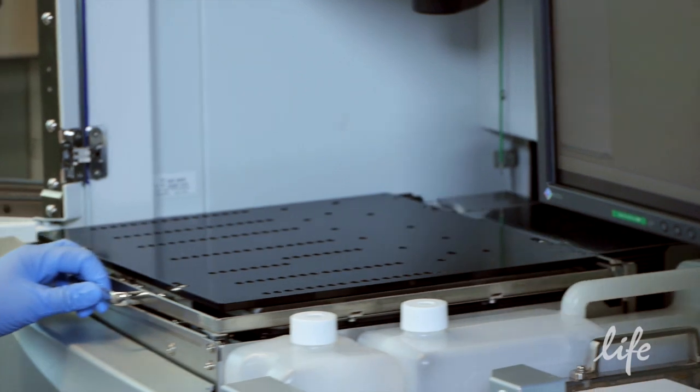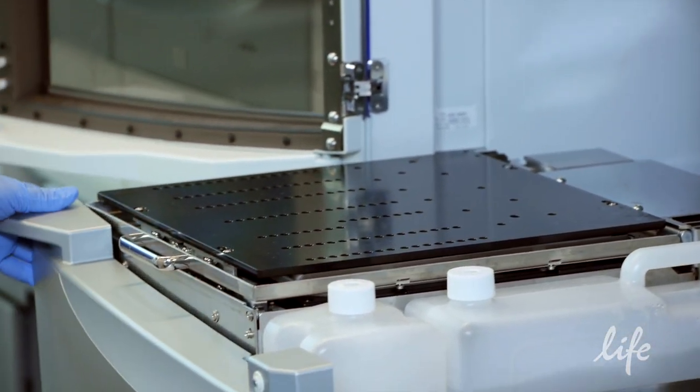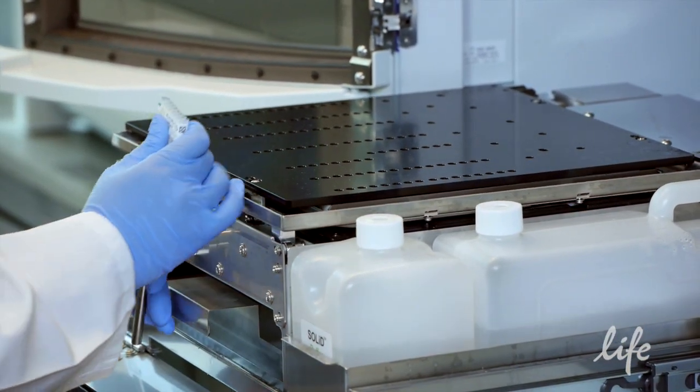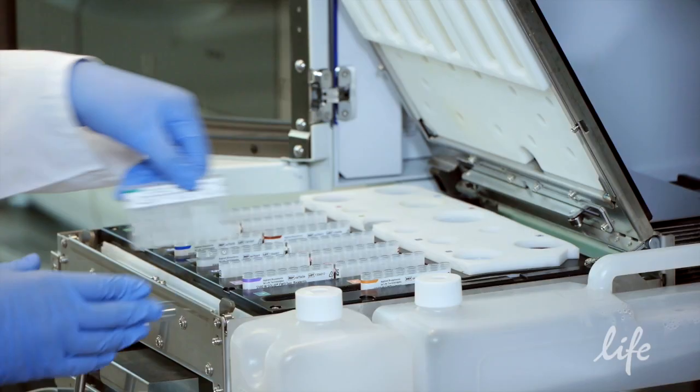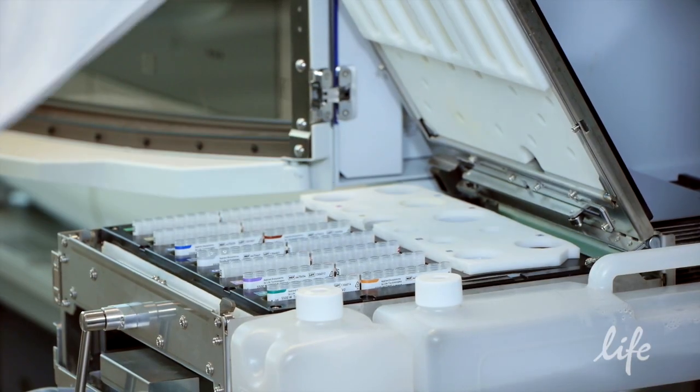Now, place the remaining contents of the 5500 Wildfire Template Amplification Strip Tube onto the instrument. The contents will be used to continue template amplification on the instrument.